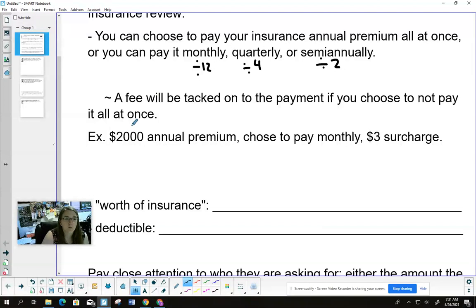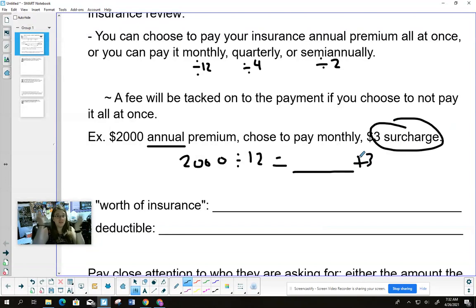So in the question, it might say something like: we have a $2,000 annual premium, chose to pay monthly with a $3 surcharge. What should you do? Divide $2,000 by 12, then add $3. That's it, you're done with the question. Pay very close attention to what the conversion is - it's going to change on the test. Make sure you know all three: divided by 12 is monthly, quarterly is 4, semi-annually is 2.